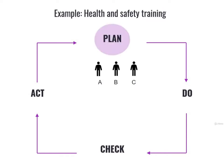First step: Plan. The planning step overall consists in figuring out which workers have already been trained and which need training, finding the best way to teach them, what to teach them, etc. Let's get into even more details. In our example, three workers are taken into consideration: Worker A, Worker B, and Worker C.